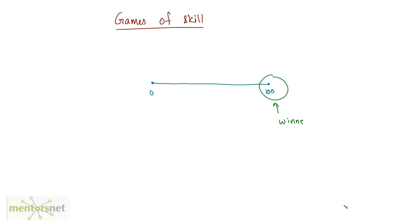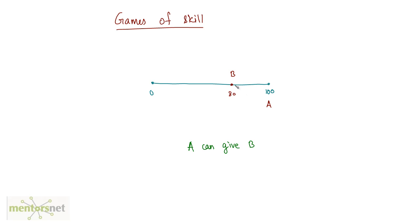Let us look at the terminology. Let's say person A is the winner, reaching 100 points, while person B has reached 80 points. In such cases, we say that A can give B some points — B is 20 points behind A, so A can give B 20 points. If a statement says A can give B 20 points, it means A is 20 points ahead of B. Based on this, let us solve some problems.